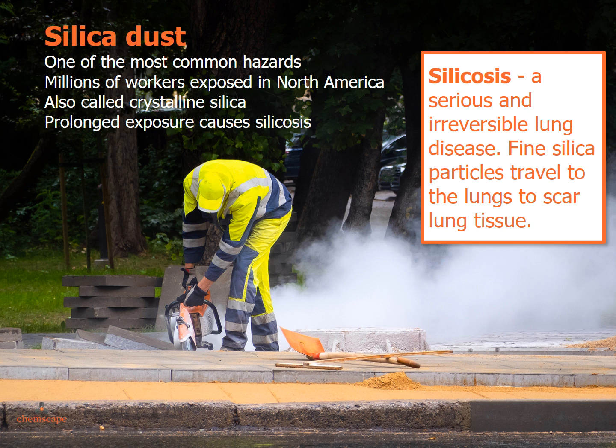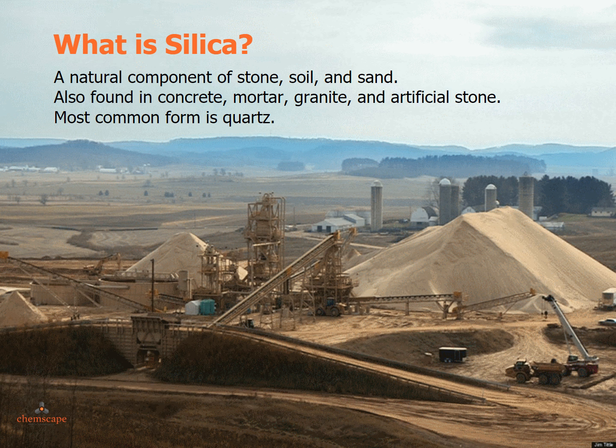Breathing in crystalline silica dust over a prolonged period can cause silicosis, a serious and irreversible lung disease in which fine particles deposited in the lungs scar the lung tissue. Crystalline silica is a natural component of stone, soil, and sand. It is also found in other materials, such as concrete, mortar, granite, and artificial stone. The most common form of crystalline silica is quartz.